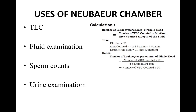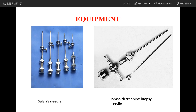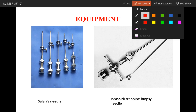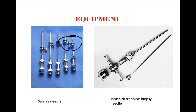Next are your bone marrow aspiration needles — these will definitely be kept in your spotters. This is your Salah's needle. You can see the guard with the edge, and this is your biopsy component. On bone marrow, you can either do aspiration — which gives a bloody smear with particles of bone marrow — or biopsy.